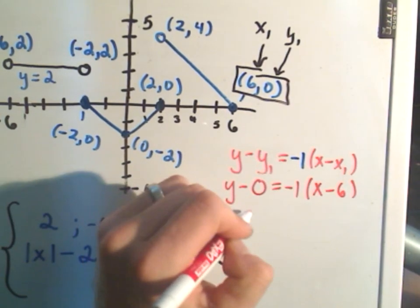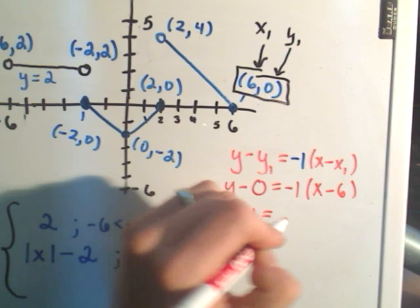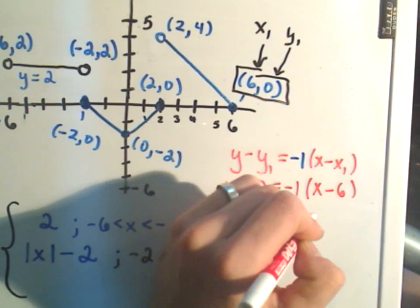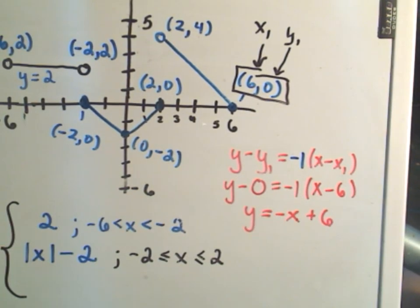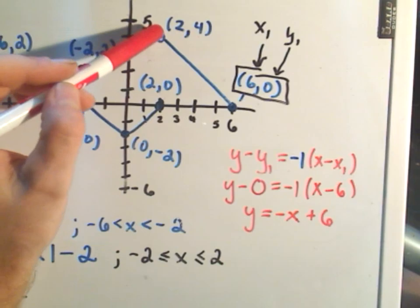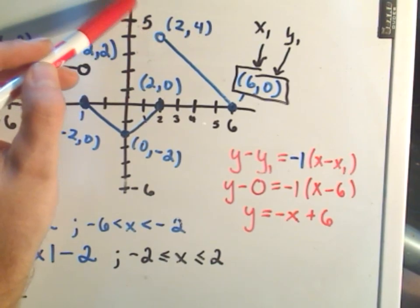And equivalently, well, y minus 0 is just y. If we distribute, we'll get -x + 6. Okay, and remember if you put it in mx + b form, this is going to be your y-intercept of 6. And it's getting close to 6, so that seems plausible.